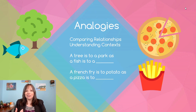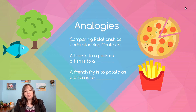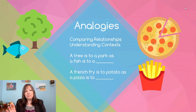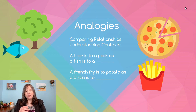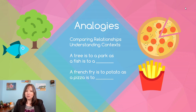You also have to understand context. An example: a tree is to a park as a fish is to blank. You have to understand what the relationship between a tree and a park is, and you have to understand where fish belong. So you need a little bit of semantic knowledge — think back to the memory unit where we talked about semantic knowledge. You also have to have that analytical side. You may have answered this with ocean, lake, or pond — those could all be acceptable.